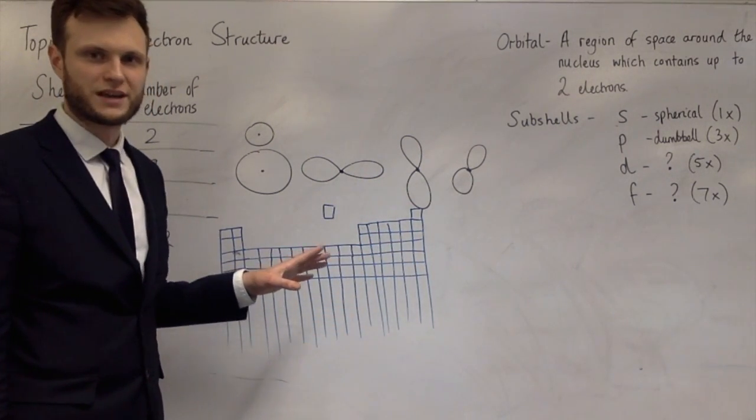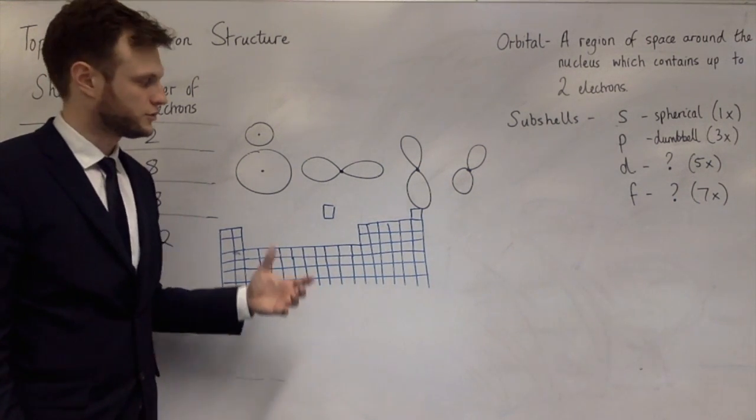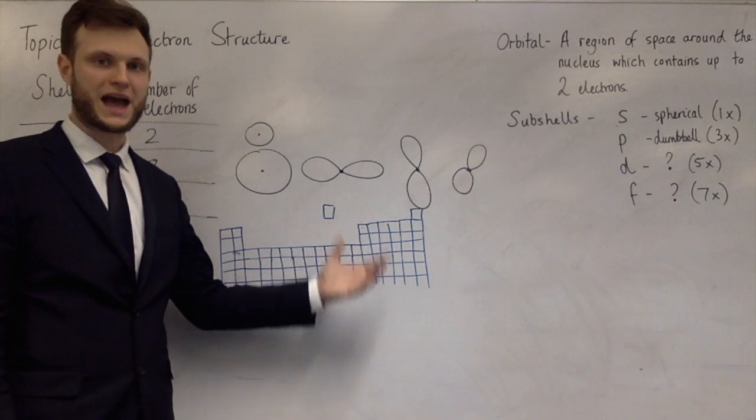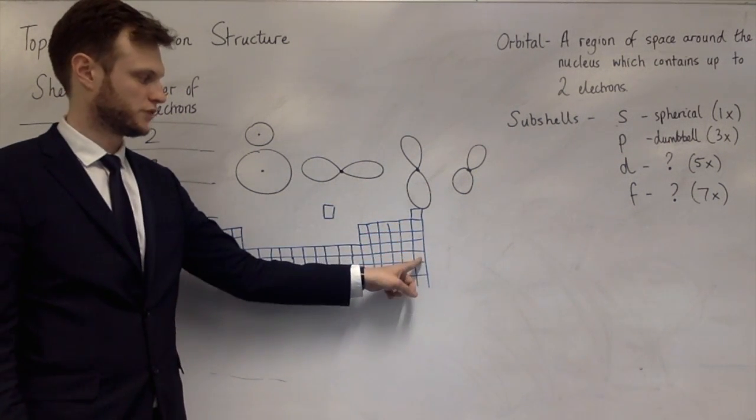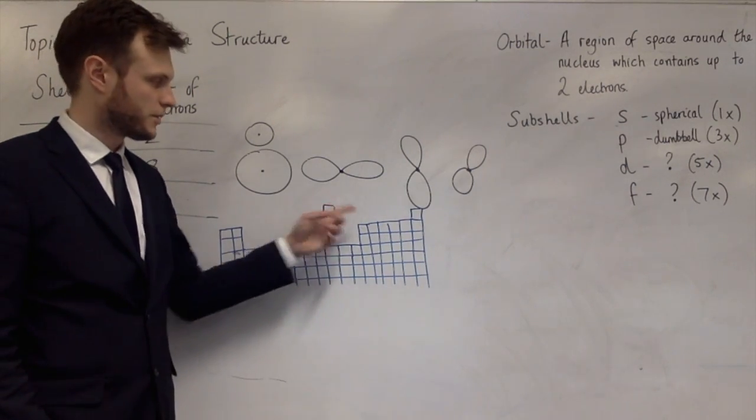Now, there's a way of writing this down shorthand, and it's called subshell notation. And you need to know how to do subshell notation for every atom up to the 36th atom, Krypton.